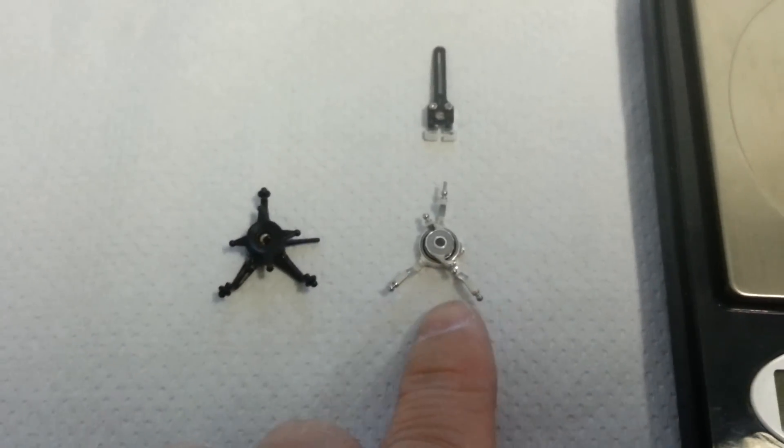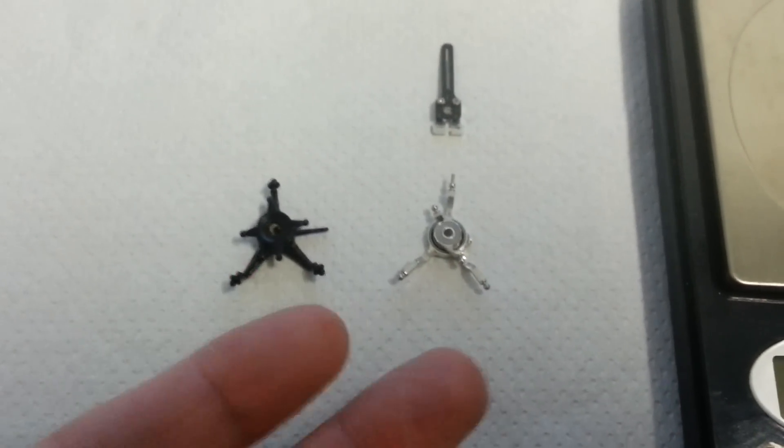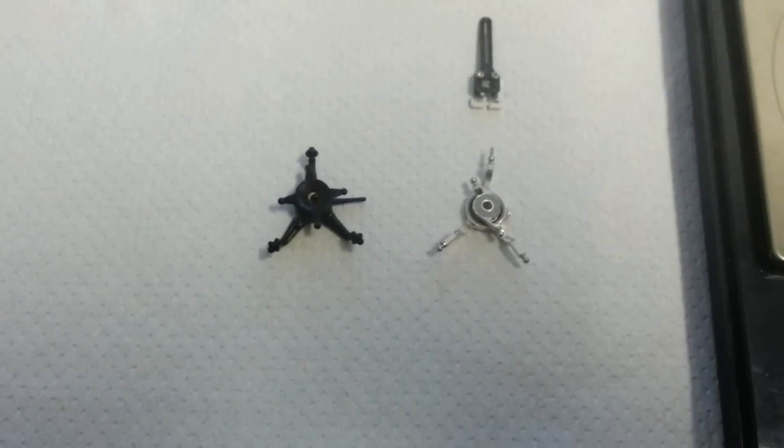So that's why I got the Micro Heli aluminum swash plate. It's like another 15 bucks because I think the stock swash was already 10 bucks by itself.